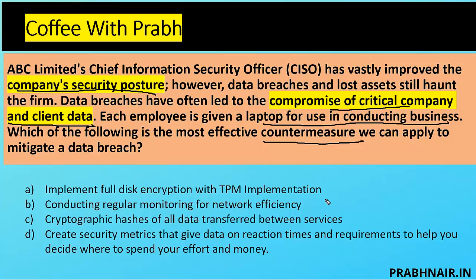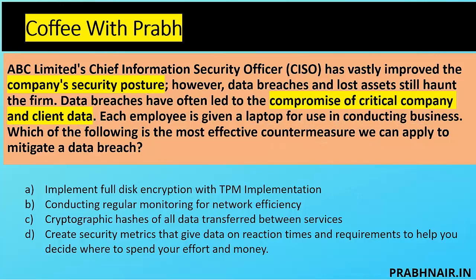Option A: implement full disk encryption with TPM — looks correct. Option B: conduct regular network monitoring — but even an effective network cannot control human error. Option C: remove cryptographic hashes for all data transfers — more of a hashing concern. Option D: create a security matrix for reaction time and spending decisions — that's more governance. The most effective security is full disk encryption via hardware-based encryption using TPM. Even if the device is lost, it maintains persistent security and provides a secure initial state. The answer is A.